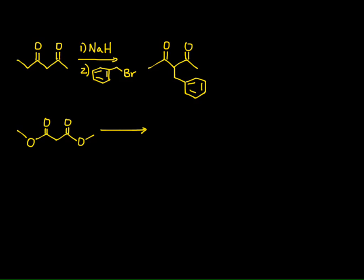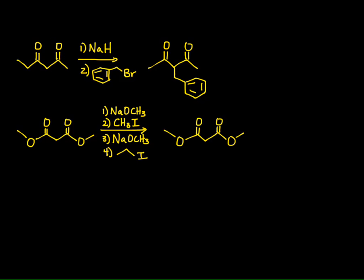Let's take a look at another example — a beta-diester. This is a dimethyl diester of malonic acid, a dimethyl malonic ester. I react it with sodium methoxide — why methoxide? Because I have methyl esters. If transesterification does occur, I get the same product. We form the enolate, which reacts with methyl iodide. We can then react it with another equivalent of sodium methoxide and treat it with ethyl iodide, getting dialkylation — a methyl group and then an ethyl group on the alpha carbon.